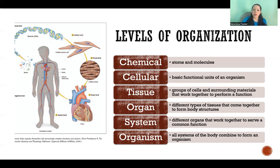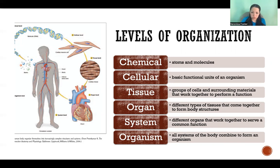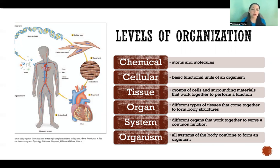When we have collections of different types of tissue — so maybe connective, epithelial, nervous tissue, or muscle tissue — when different types of tissue come together to form a body structure, that body structure is an organ.